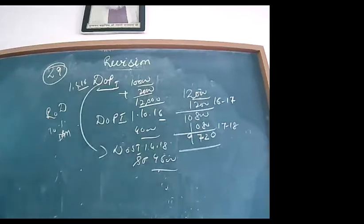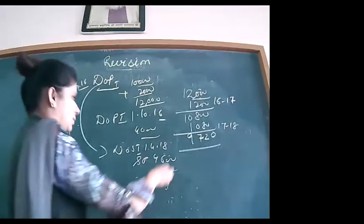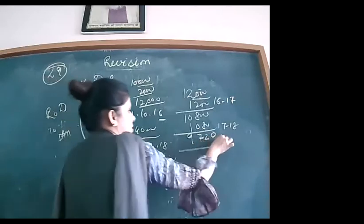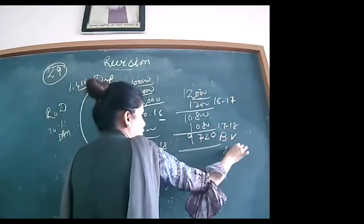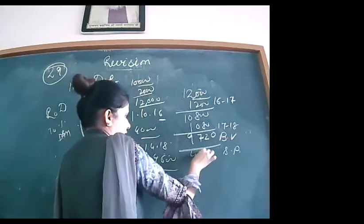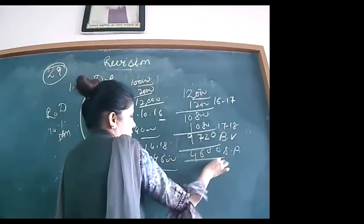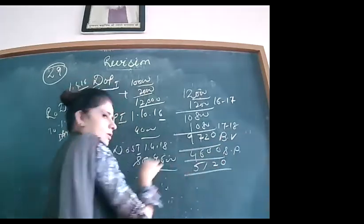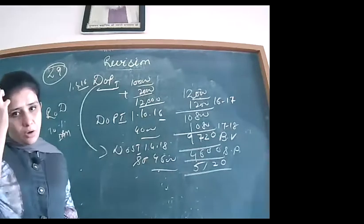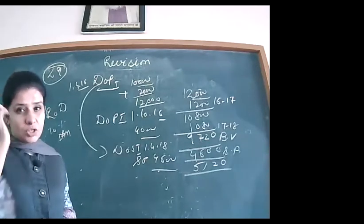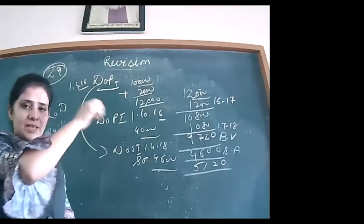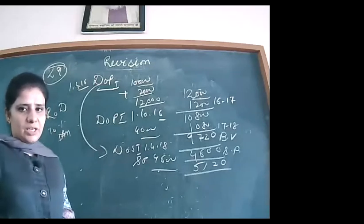The loss = ₹9,720 − ₹4,600 = ₹5,120. Checking from the book answer for question 29: ₹5,120 loss — matched! Now this entire scenario will be shown with the help of the machinery ledger account.